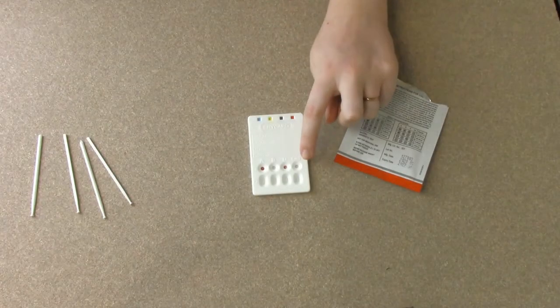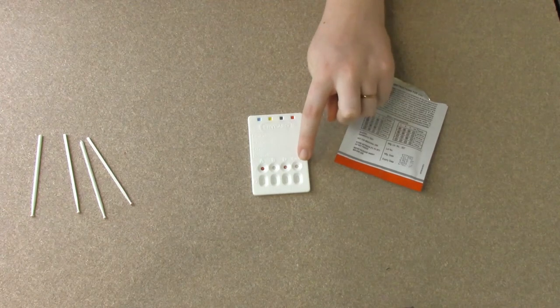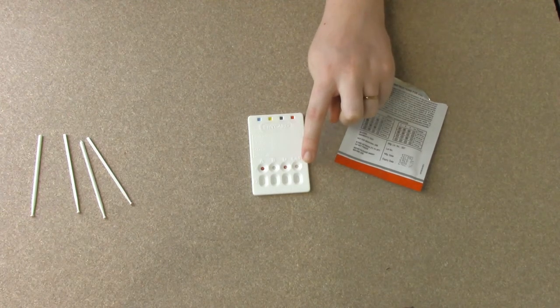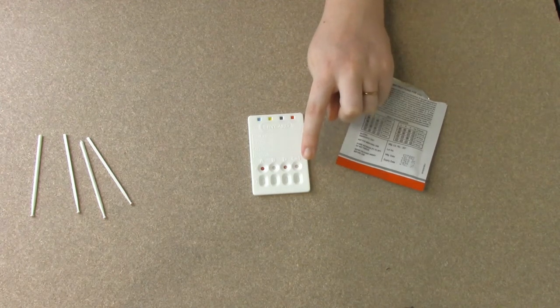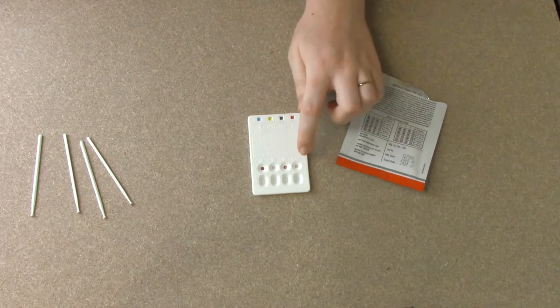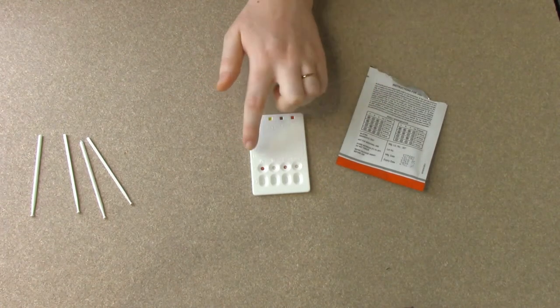It looks like the control has turned clear as well. Now it is really important that the control turns clear. This is how we tell that the test is valid. Because it is turning clear, I can trust that the rest of my result is accurate.